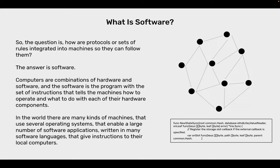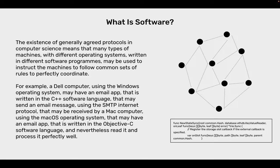What is software? The question is how are protocols or sets of rules integrated into machines so they can follow them? The answer is software. Computers are combinations of hardware and software, and the software is a program with a set of instructions that tells the machines how to operate and what to do with each of their hardware components. In the world there are many kinds of machines that use several operating systems that enable a large number of software applications written in many software languages that give instructions to their local computers. The existence of generally agreed protocols in computer science means that many types of machines with different operating systems, written in different software programs, may be used to instruct the machines to follow common sets of rules to perfectly coordinate.